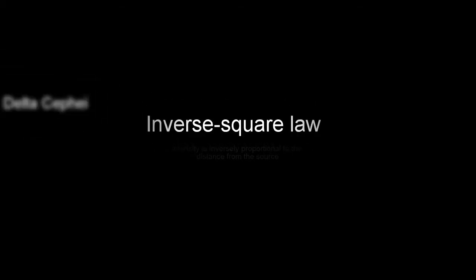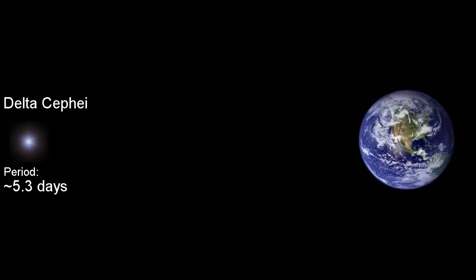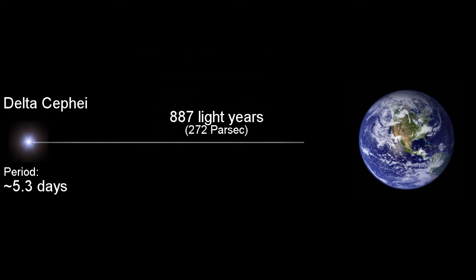The rate at which the brightness decreases is called the inverse square law. Since we can detect the period of a variable star fairly accurately based on Levitt's discovery, we now can determine the distance fairly accurately also.